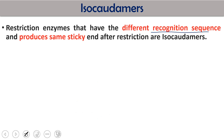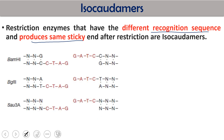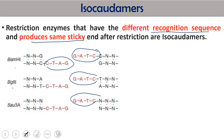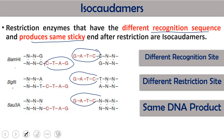The third term is isocaudomers: restriction enzymes which have different recognition sequences and different restriction sites but produce the same sticky end after digestion are called isocaudomers. For example, BamHI, BglII, and Sau3AI recognize different sequences but all produce the same sticky end CTAG. Different recognition site, different restriction site — only the product is the same. That is called an isocaudomer.